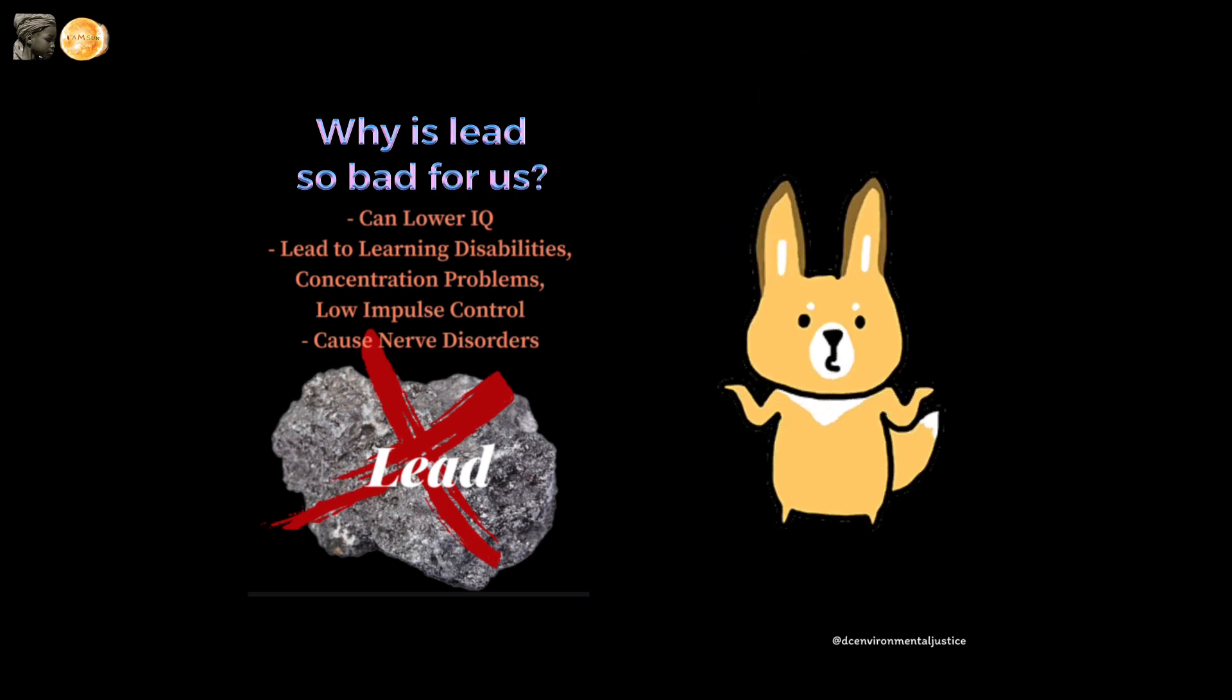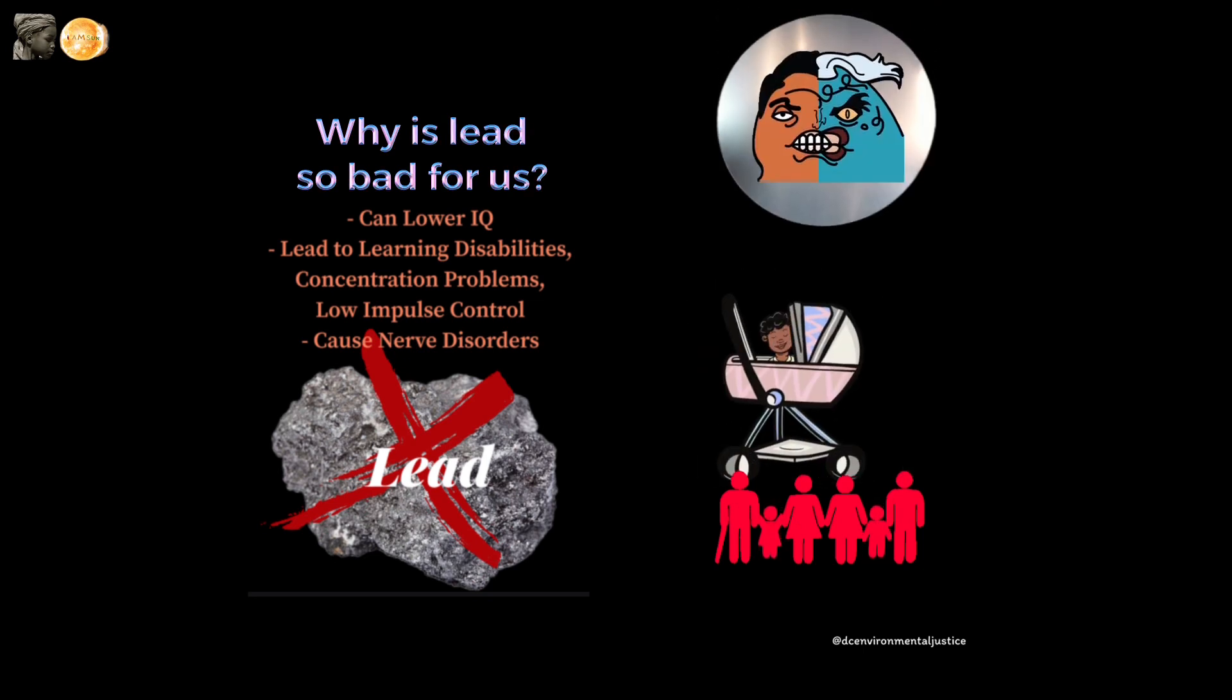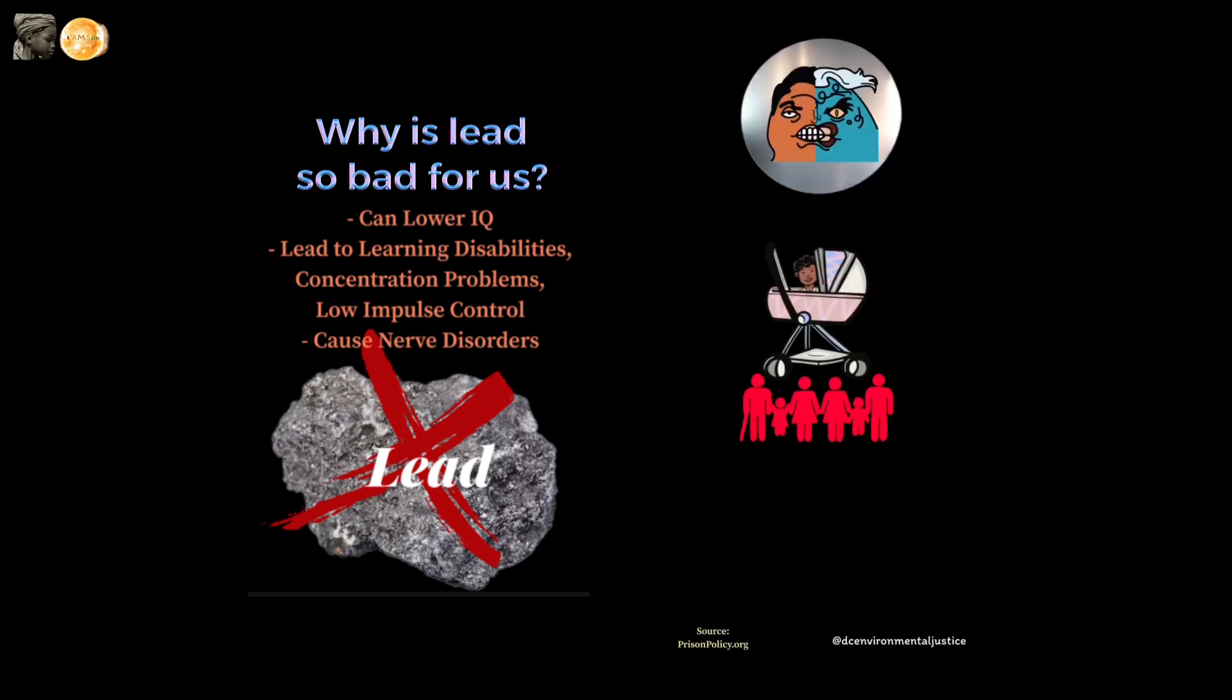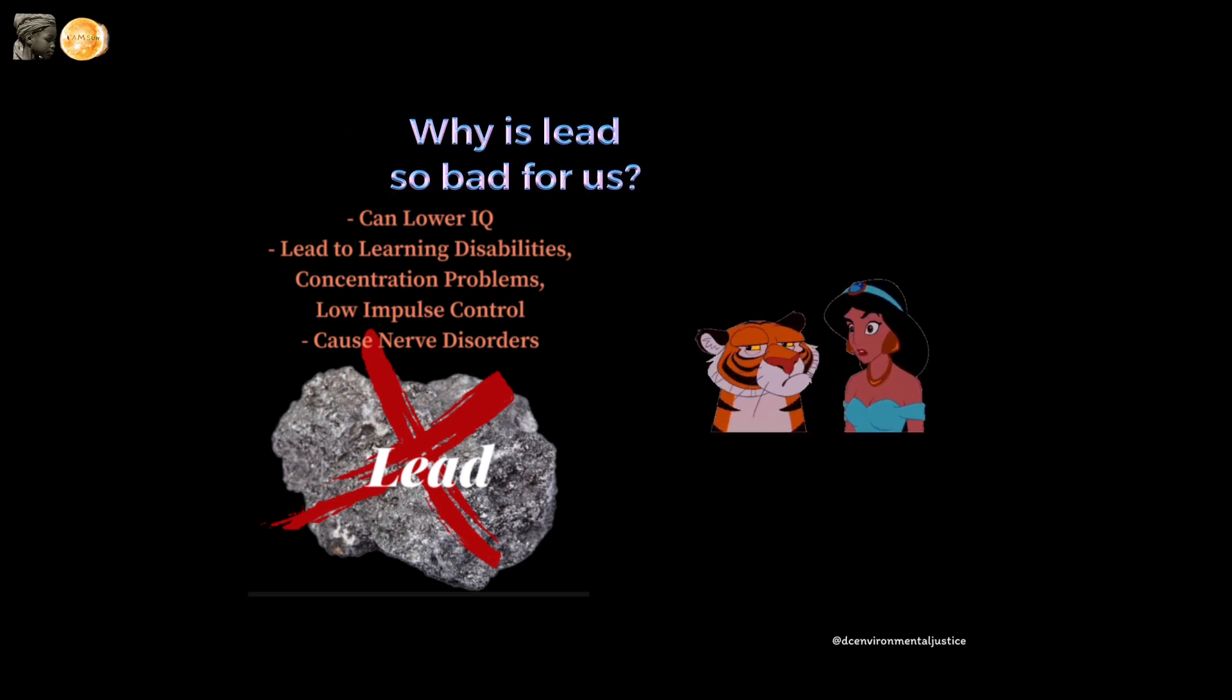But you want to know what's even wilder? Children living in poverty have significantly higher average blood lead levels than their wealthier peers. And what's wildest? People living in poverty are the most represented category of people in American prisons. Sort of makes you wonder what's really going on.